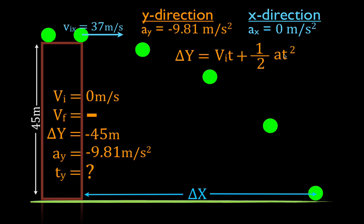We can simplify this equation because the initial velocity in y is zero, so the initial velocity times time term equals zero and drops out. Now we solve for time algebraically. To isolate time — not time squared — we multiply both sides by two to eliminate the one-half, then divide by the acceleration, and take the square root of both sides. That gives us: time equals the square root of two times the change in position in y divided by the acceleration.